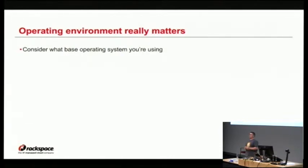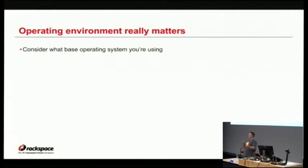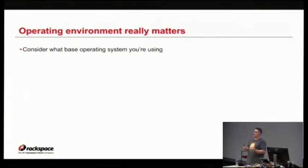There are a few things about people's operational environments I wish I could say to them before they deployed. First, consider what base operating system you're going to use. Long-term supported releases are very attractive, but depending on your vendor, we sometimes experience bugs in the software we depend on, and it can take a very long time to get bug fixes backported to long-term supported releases. Nova is really just a way of orchestrating tools you already have on your machines, so if your OpenVSwitch doesn't work properly, you're going to have a bad day.